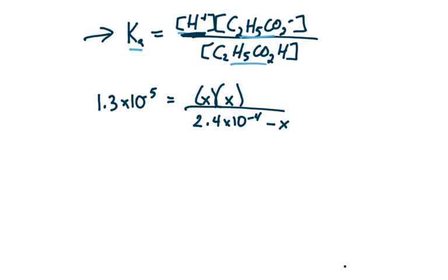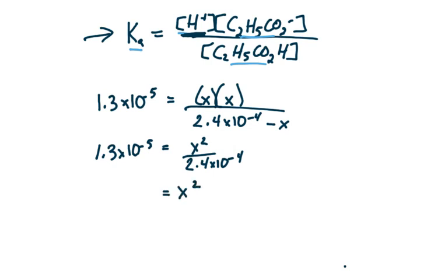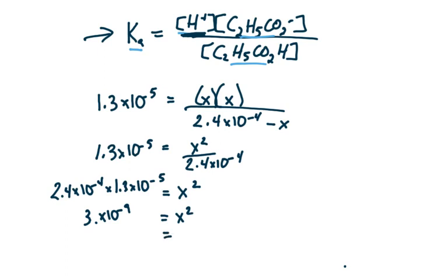We're going to use the approximation method and check if it is valid. Using the approximation, we drop X in the denominator: 1.3 times 10 to the minus 5 equals X squared over 2.4 times 10 to the minus 4. Solving for X, we get X squared equals 3 times 10 to the minus 9. Taking the square root of both sides, X equals 5.59 times 10 to the minus 5.